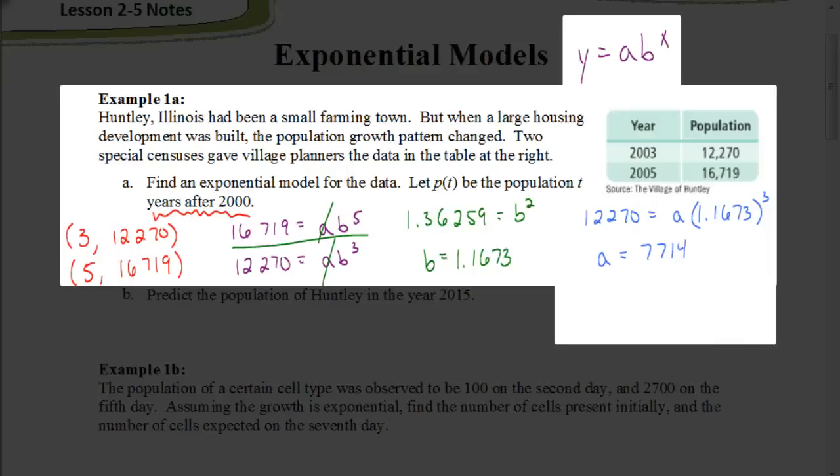Well, now we need an equation. Well, that's what they're asking for. So our equation is going to be in the form y equals a times b to the x power. So it would be y equals my a, which is 7,714, times b, which is 1.1673 to the x power.